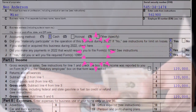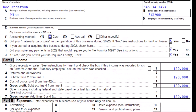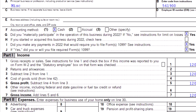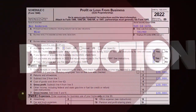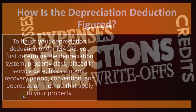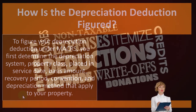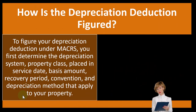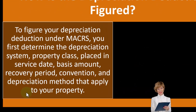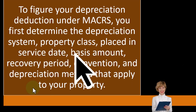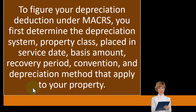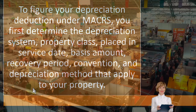Even if you're on a cash-based system you will generally have to deviate to an accrual concept when it comes to property, plant, and equipment — depreciable assets. We're focusing on those main categorizations of depreciable assets, generally MACRS standards, and we have to layer on top of that the concepts of Section 179 deductions and the special depreciation allowance, which we talked about in prior presentations. To figure your depreciation deduction under MACRS — the standard depreciation method — you first determine the depreciation system, property class, placed-in-service date, basis amount, recovery period, convention, and depreciation method to apply to your property.